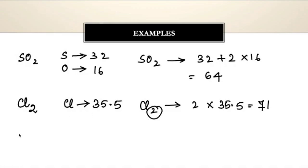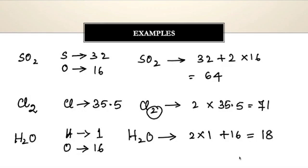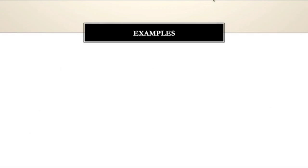Similarly for water (H2O): hydrogen has atomic mass 1 and oxygen has atomic mass 16, so the molecular mass of water is 2 × 1 plus 16, which equals 18. This is how, by adding the atomic masses, we can calculate the molecular masses.